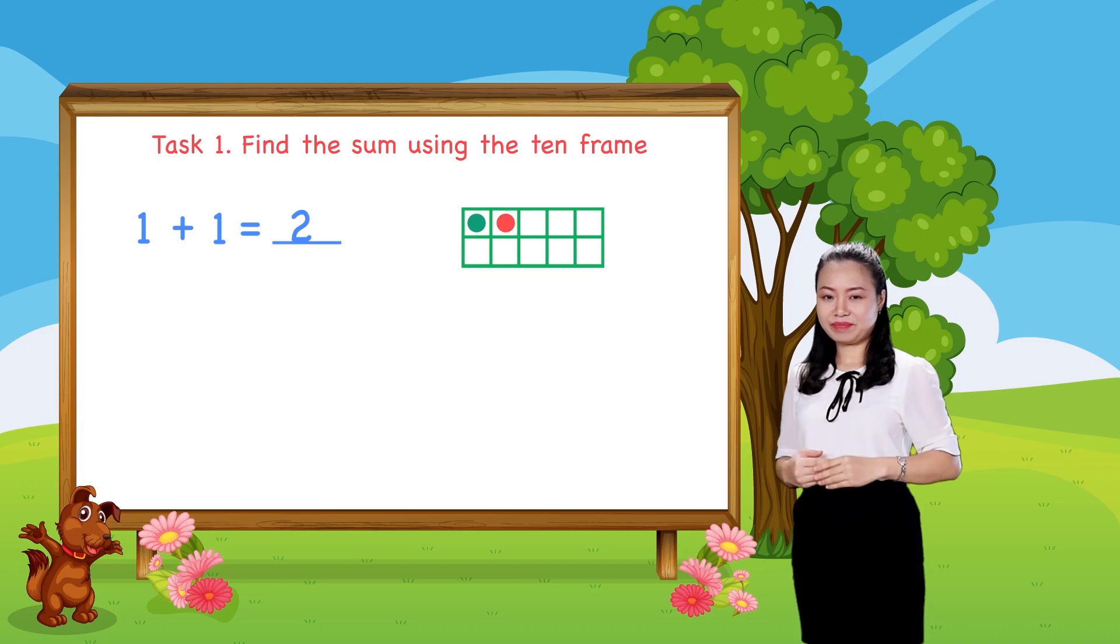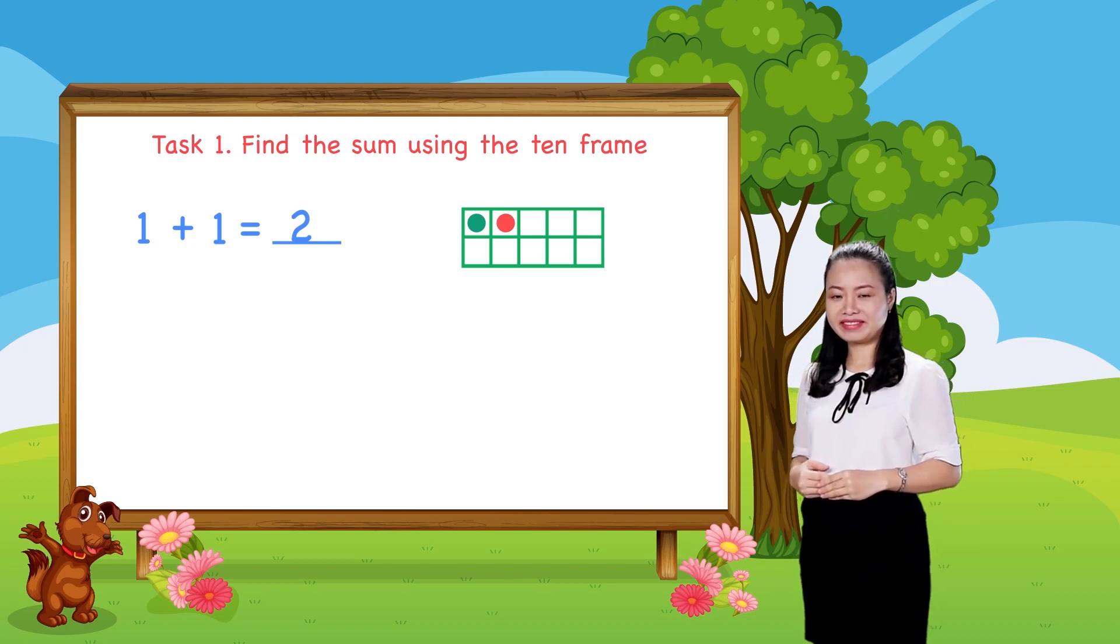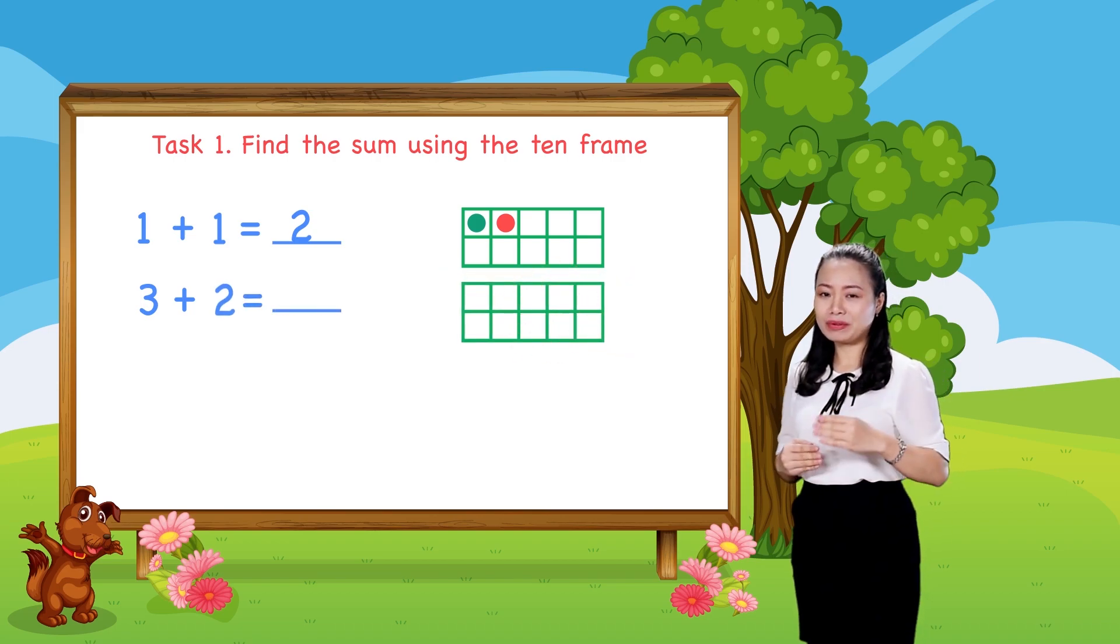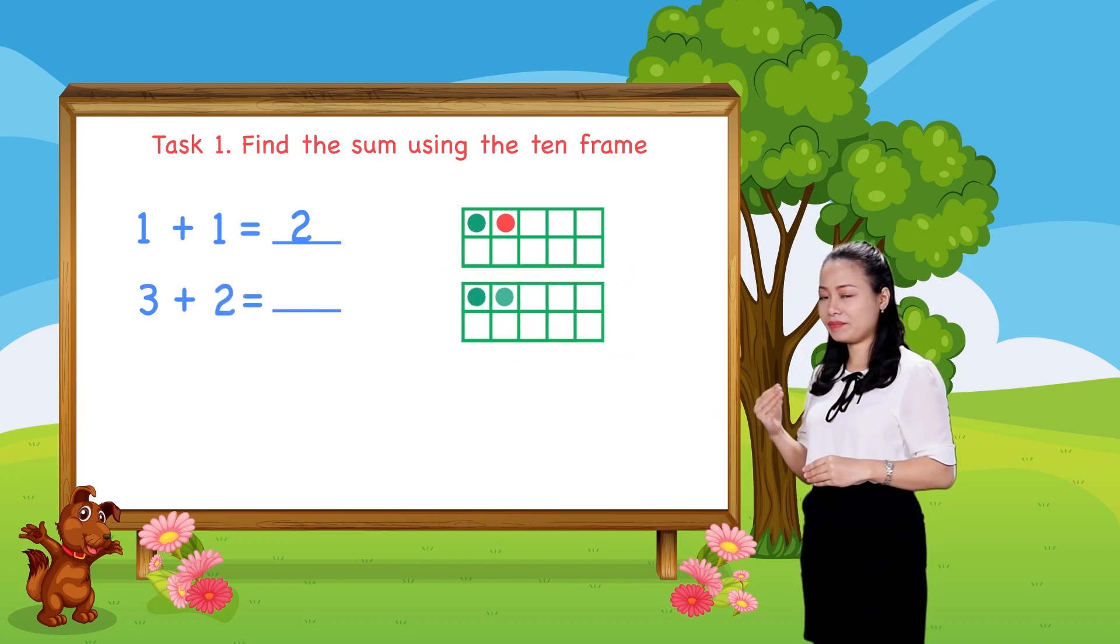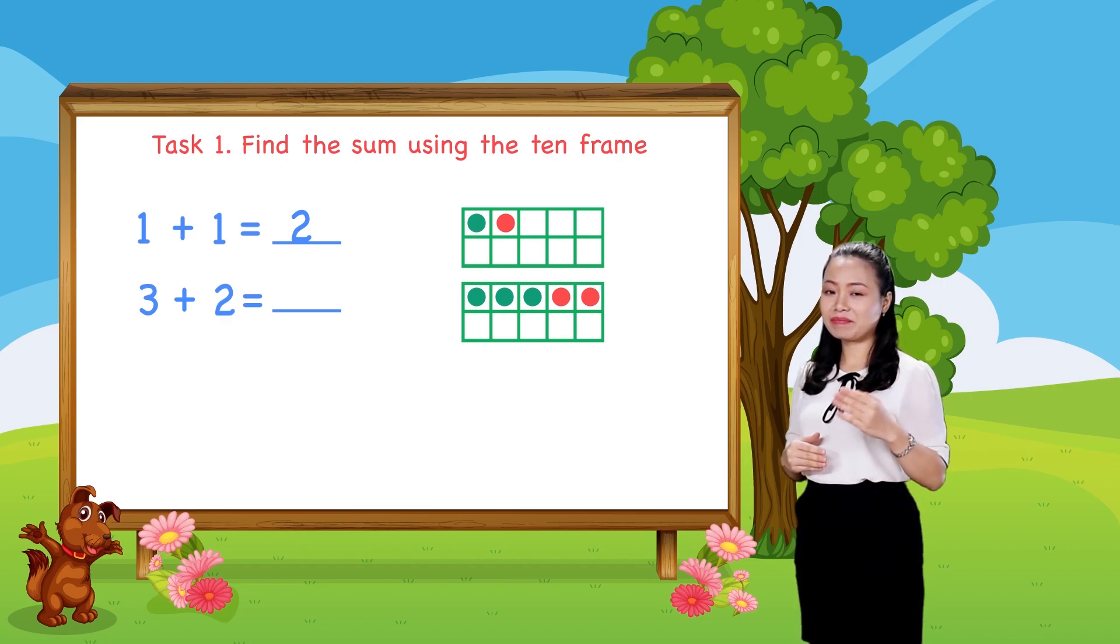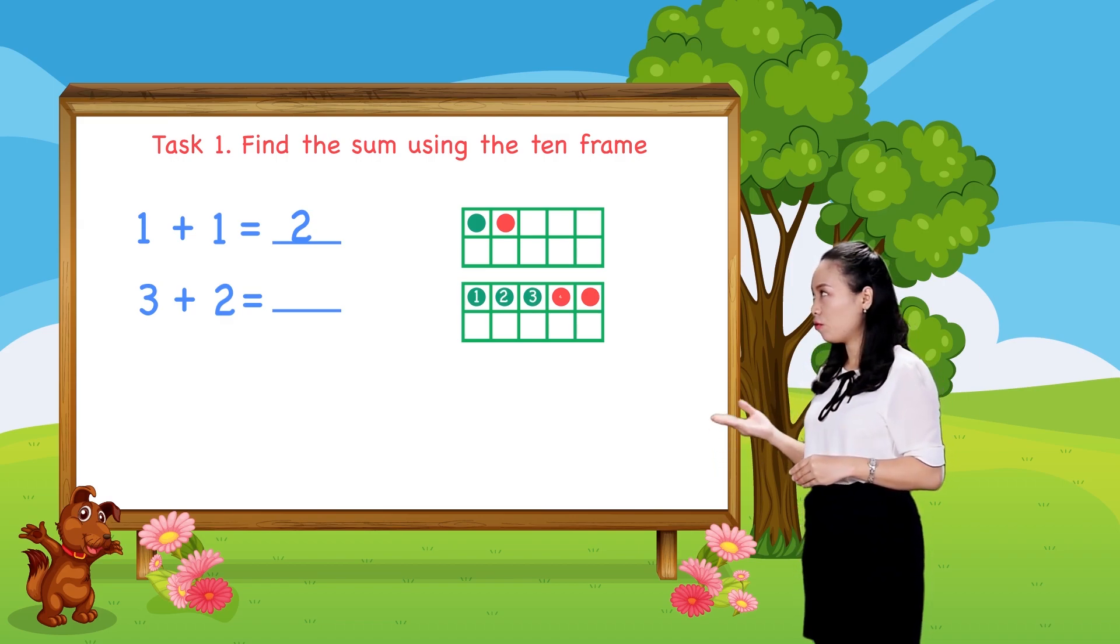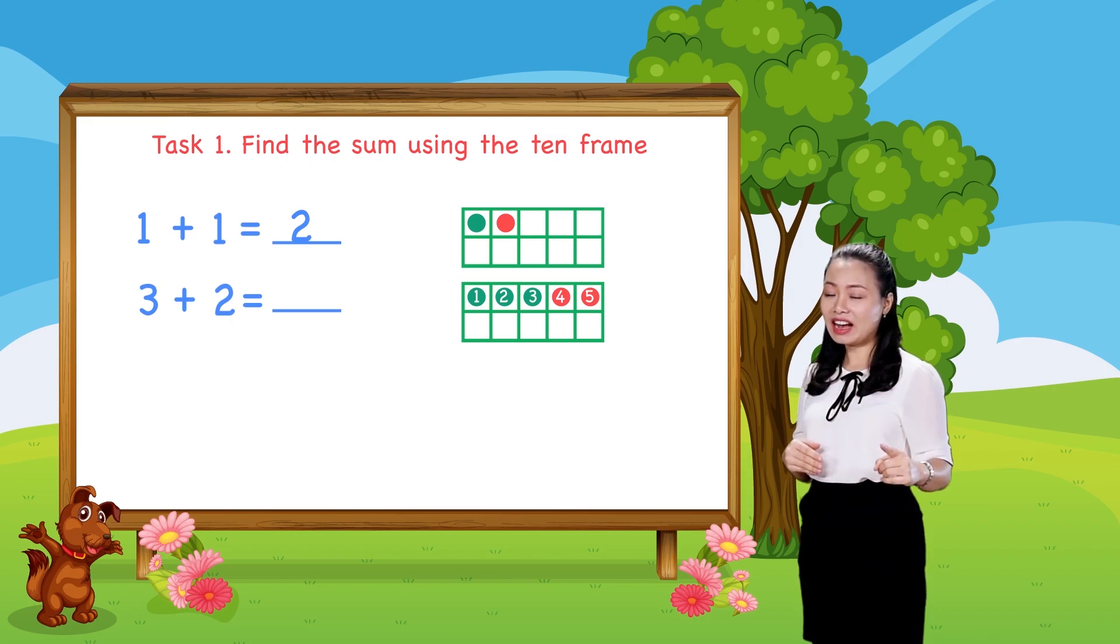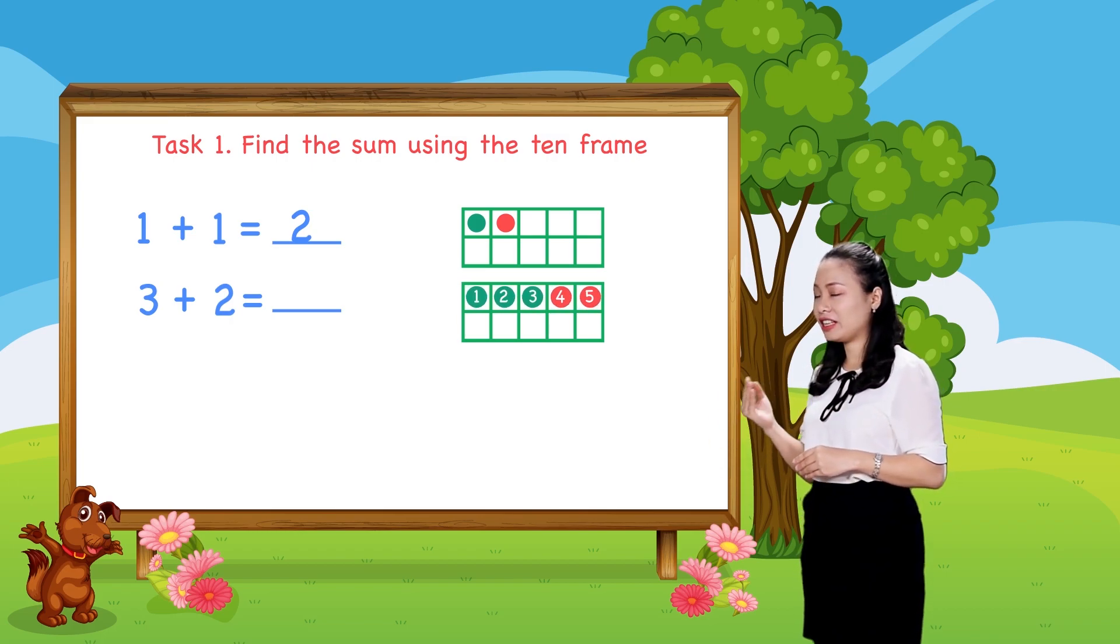Next, to find 3 plus 2, we draw 3 dots. Then, 2 more dots in the 10 frame. Then, count the total number of dots to find the sum. Let's count. 1, 2, 3, 4, 5. So, 5 dots in total.